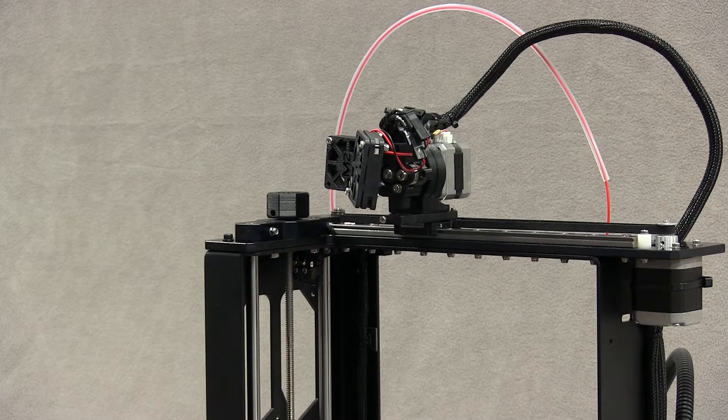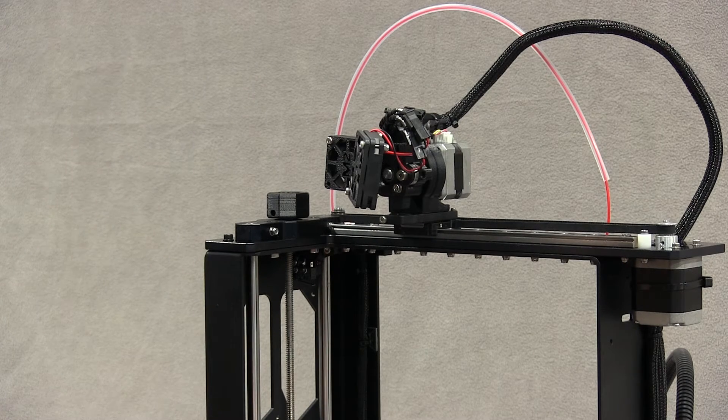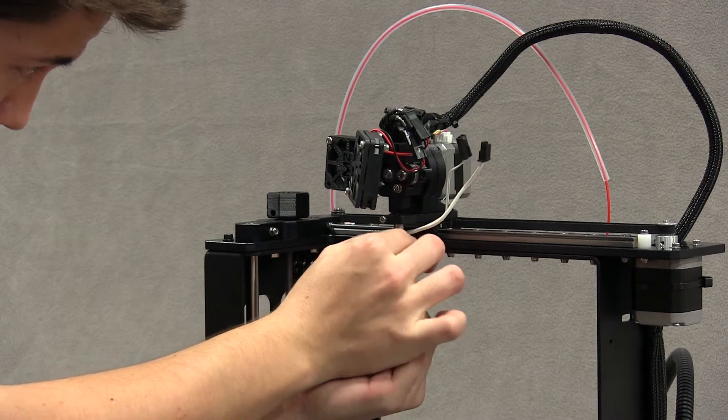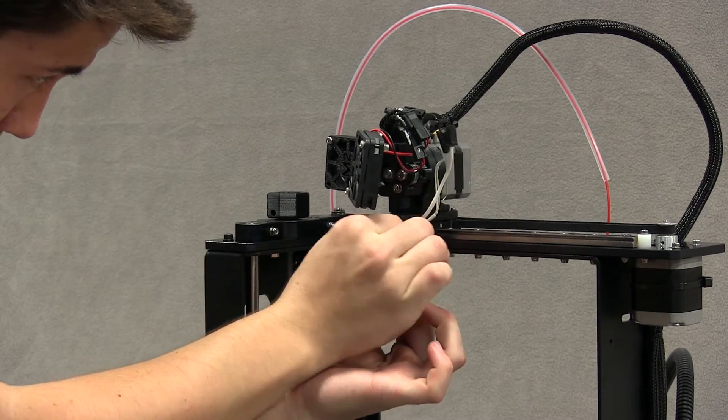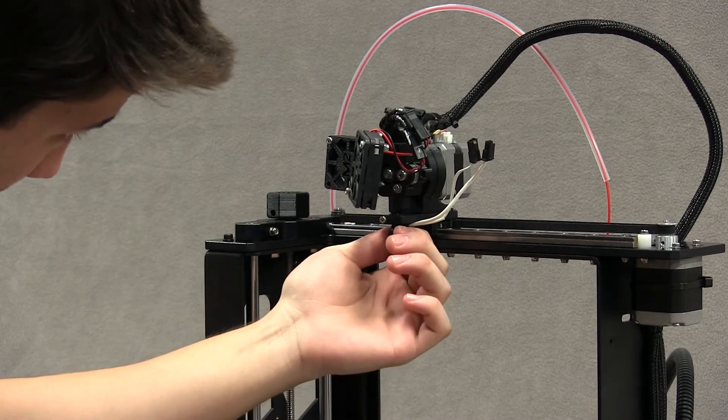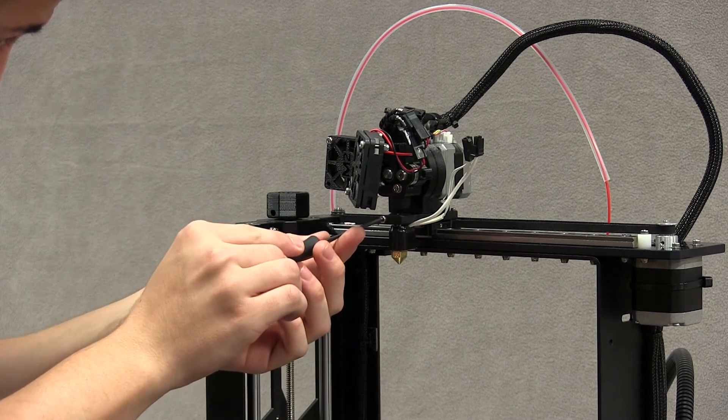To install your V4 hotend, gently slide the V4 hotend up into the receiver in the mounting plate. Align the top edge of the barrel with the top edge of the mounting plate and use the clamp screw to hold everything in place.